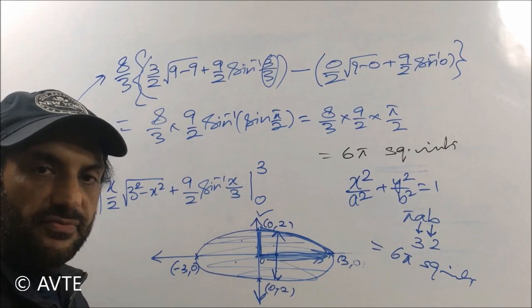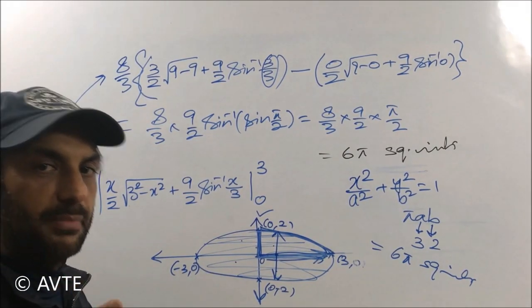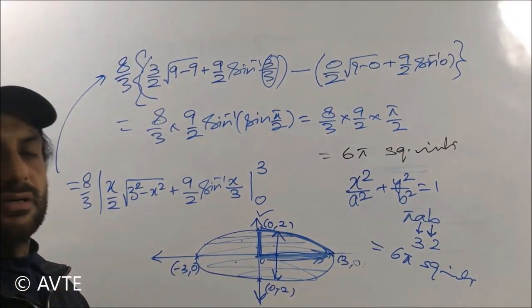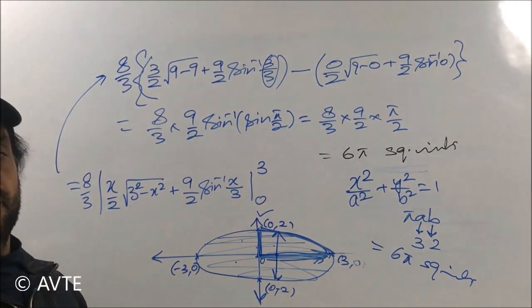So even if you are not aware about parametric forms, but by eliminating the parameter, you can get the curve, and hence you can find the area. So next time it's your turn to try.